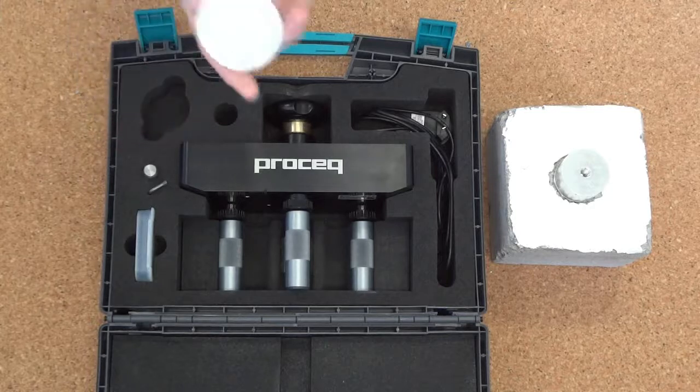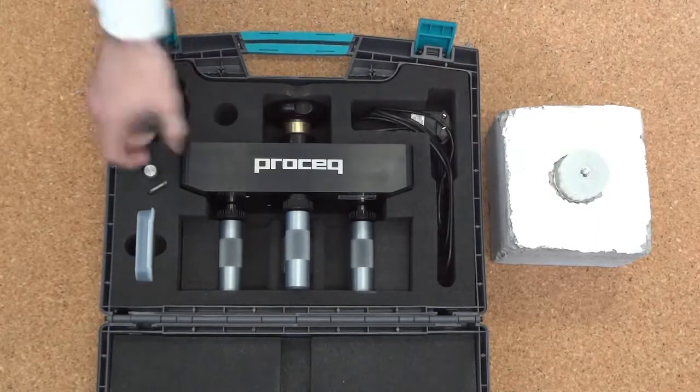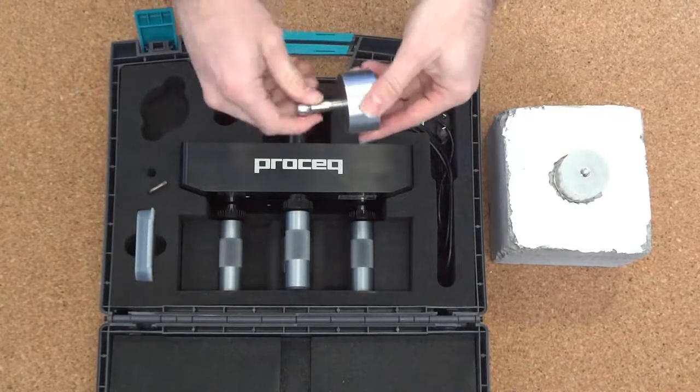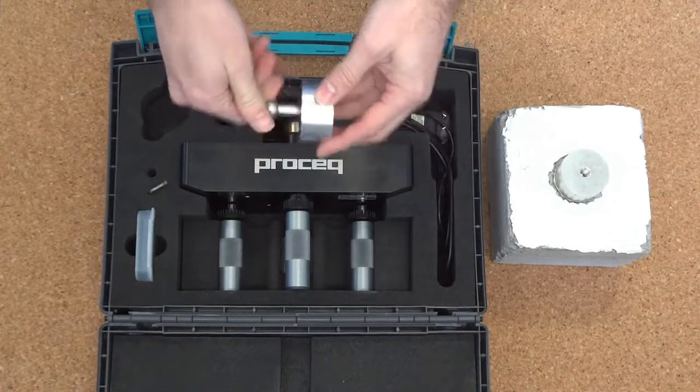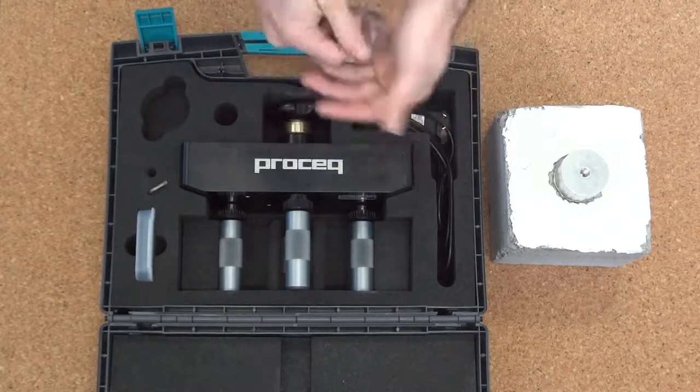The unit includes a single sample pull-off disc or dolly which I bonded to a piece of concrete here. We have the draw bolt which is engaged with this dolly and then used to pull it from the surface of the concrete. The rounded edge is so that it pulls directly up when testing.